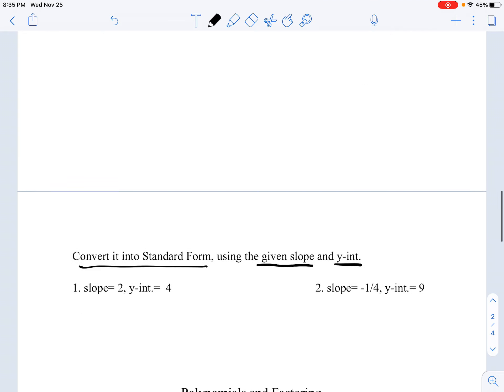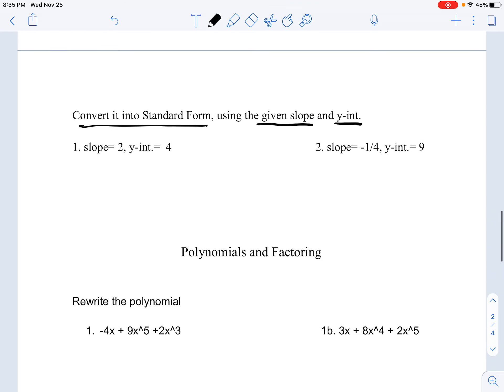Now, in this example, we're converting it into standard form, but we're only given slope and Y-intercept. Well, to solve this, we actually have to create an equation of our own. And to do that, we've got to utilize the equation for slope-intercept. Slope-intercept form states that Y is equal to MX plus B. M being your slope and B being your Y-intercept.